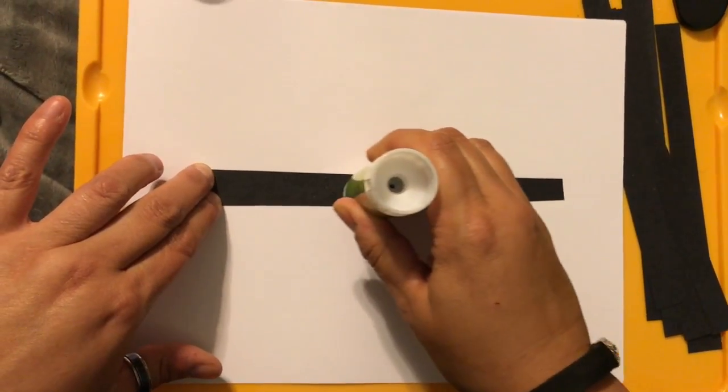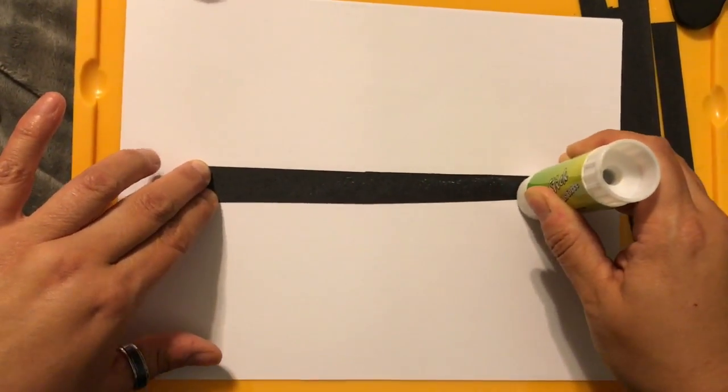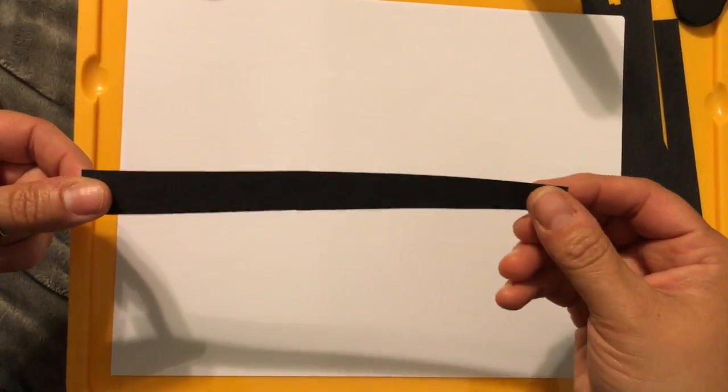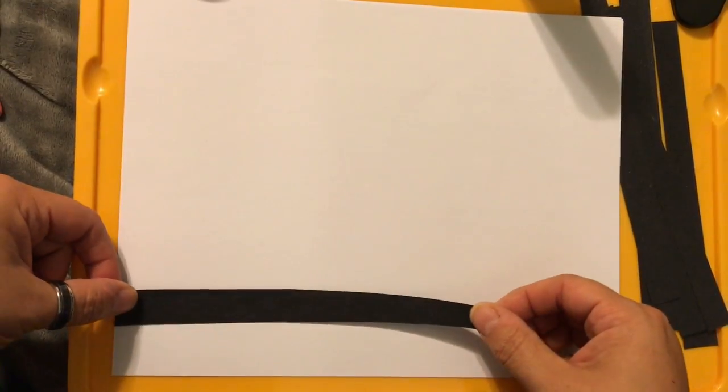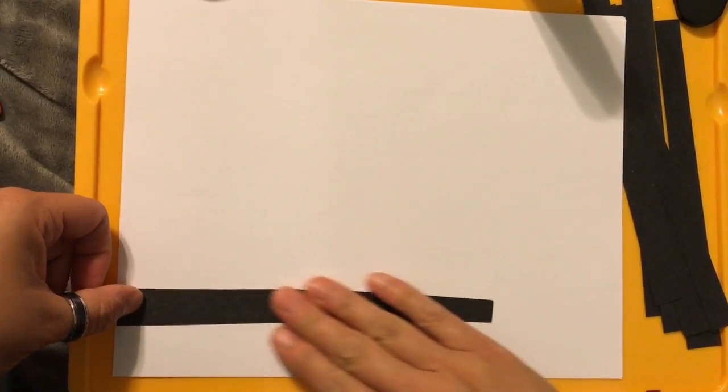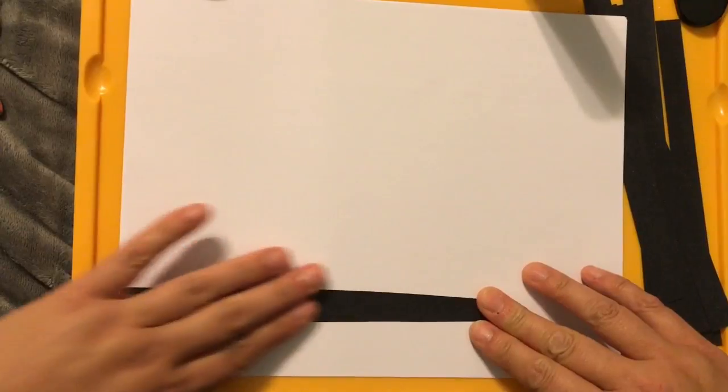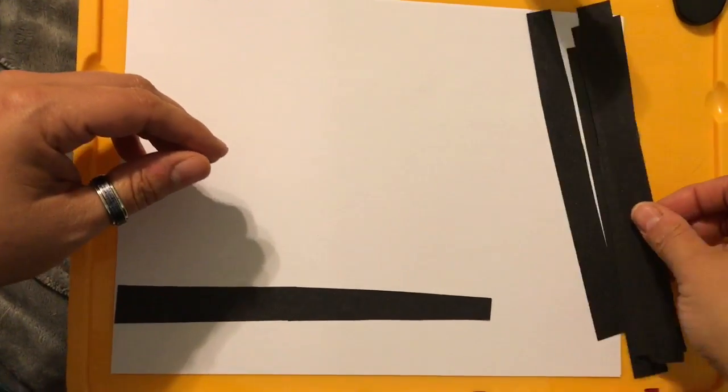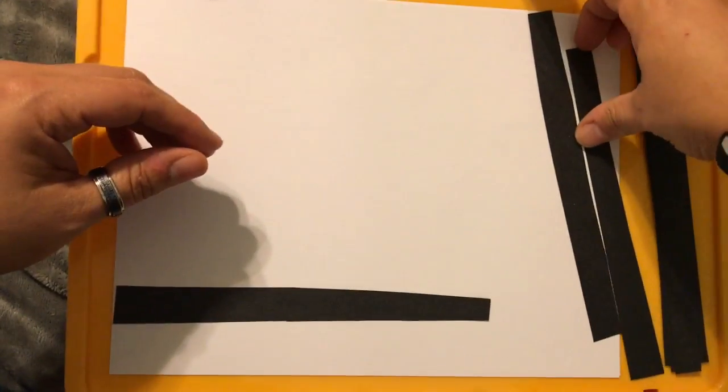So first thing we're gonna do is we're going to put some glue stick on our very first strip of paper. And this one we're going to put, let's try horizontal.